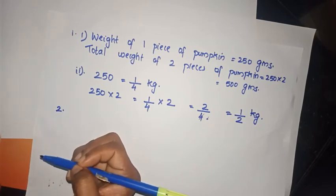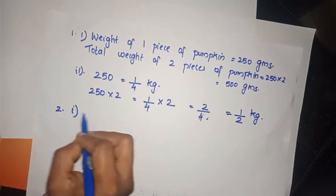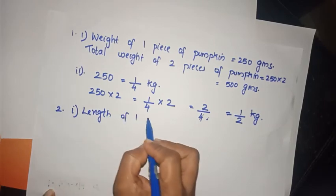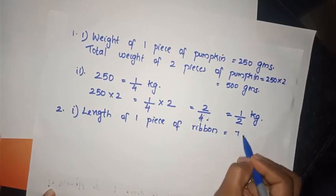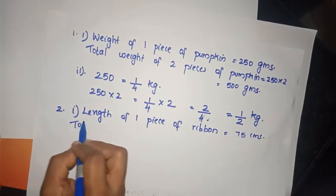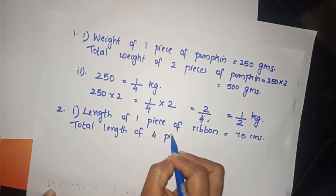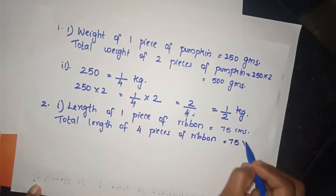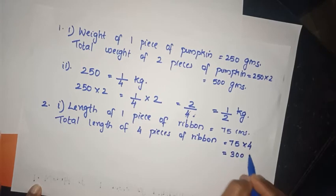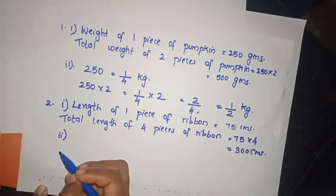What is the total length of 4 pieces of ribbon, each of length 75cm? The length of 1 piece of ribbon is 75cm. To find the total length of 4 pieces, we calculate 75 times 4, which equals 300cm.